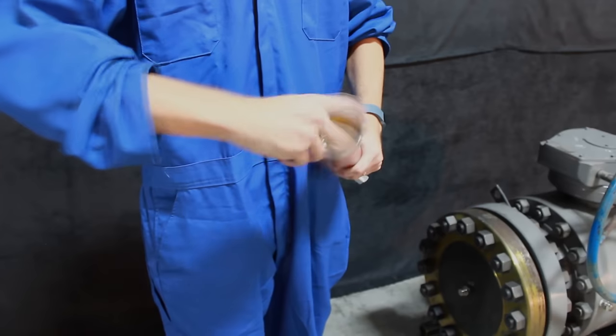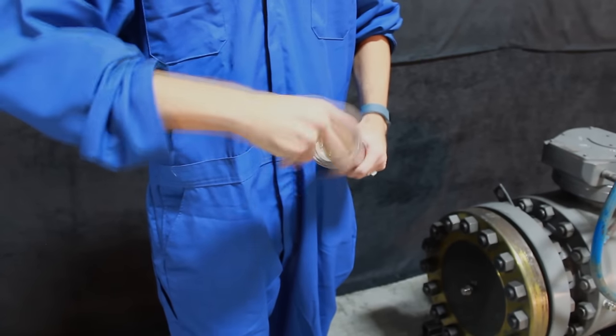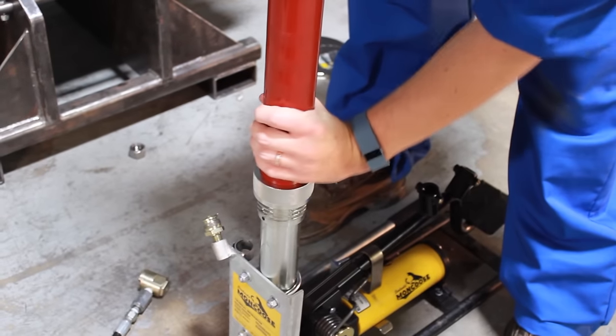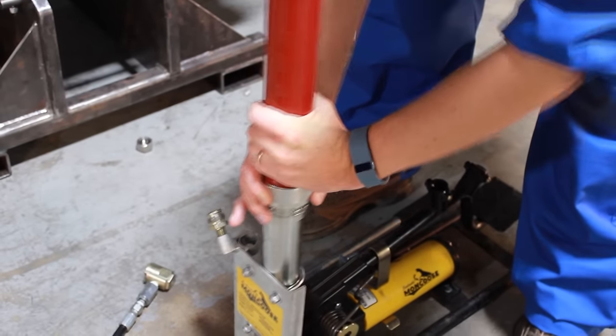In this instance, the Mongoose piston will need to be at the top of the Seal-Weld Barrel. Attach the adapter ring to the Breach-Lock threads with a 1/8 turn.